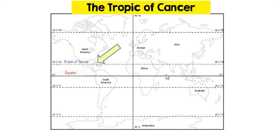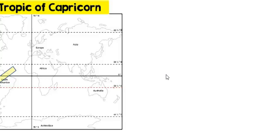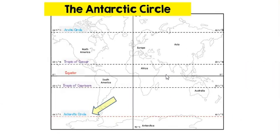You have the Tropic of Cancer at 23 and a half degrees north, the Tropic of Capricorn at 23 and a half degrees south, the Arctic Circle at 66 and a half degrees north, and the Antarctic Circle at 66 and a half degrees south. These lines of latitude help dictate climate zones based on how close you are to the equator.